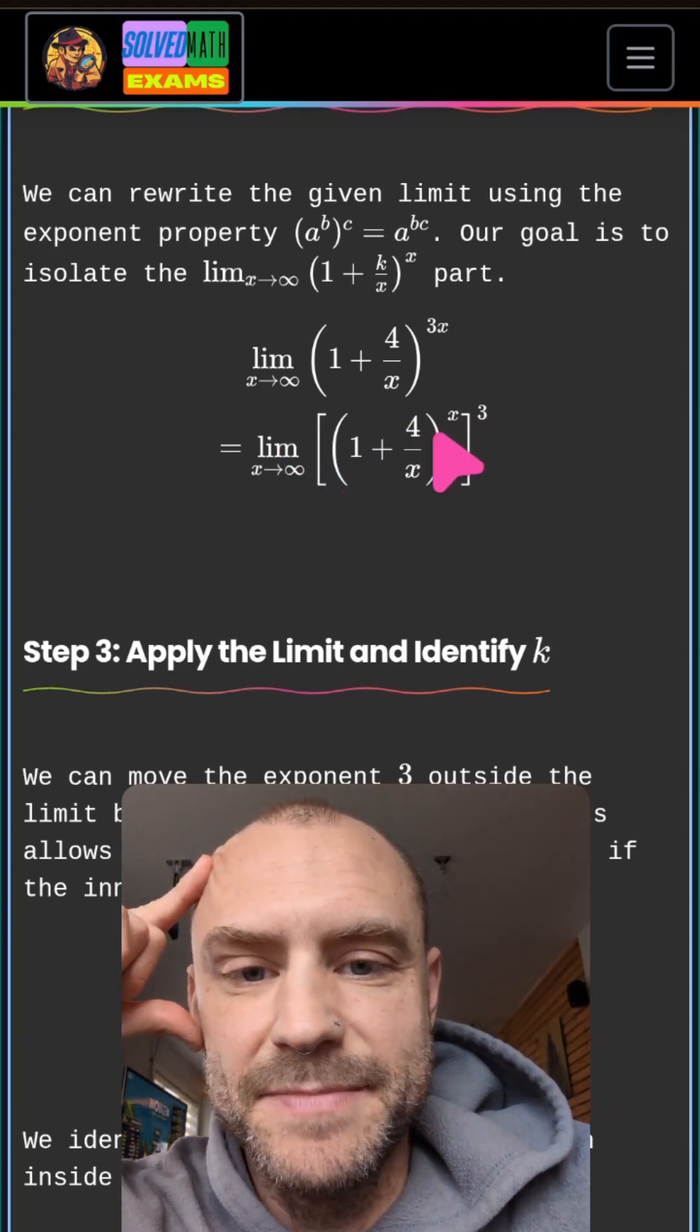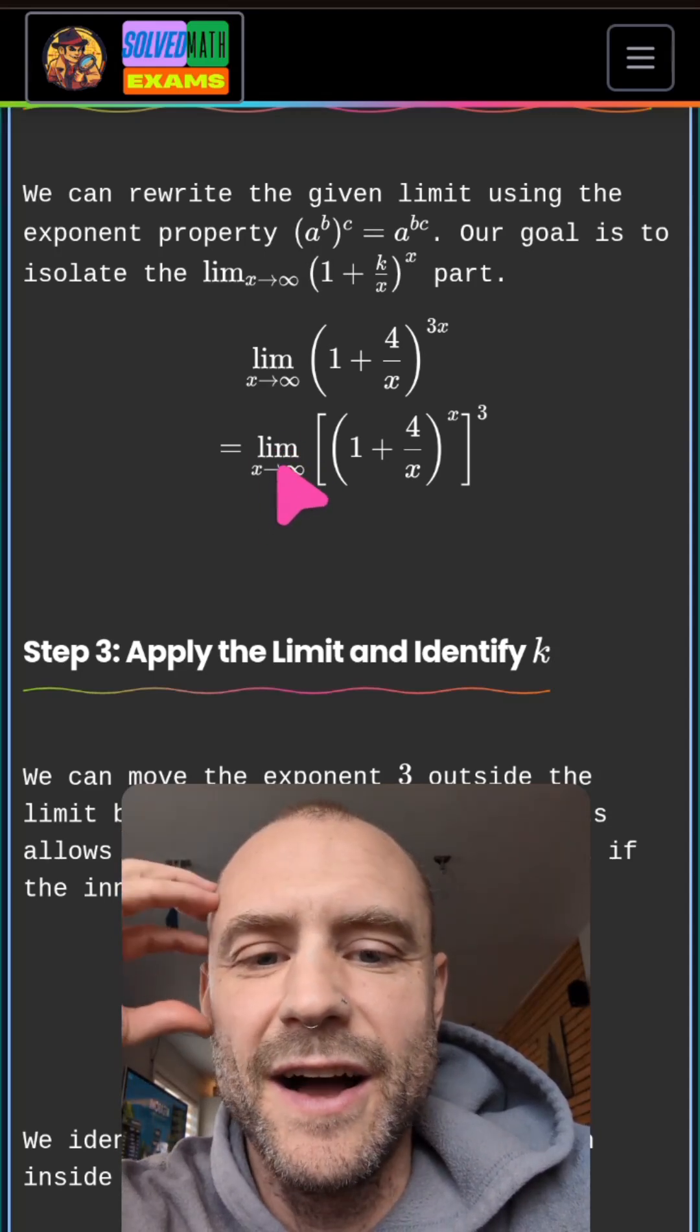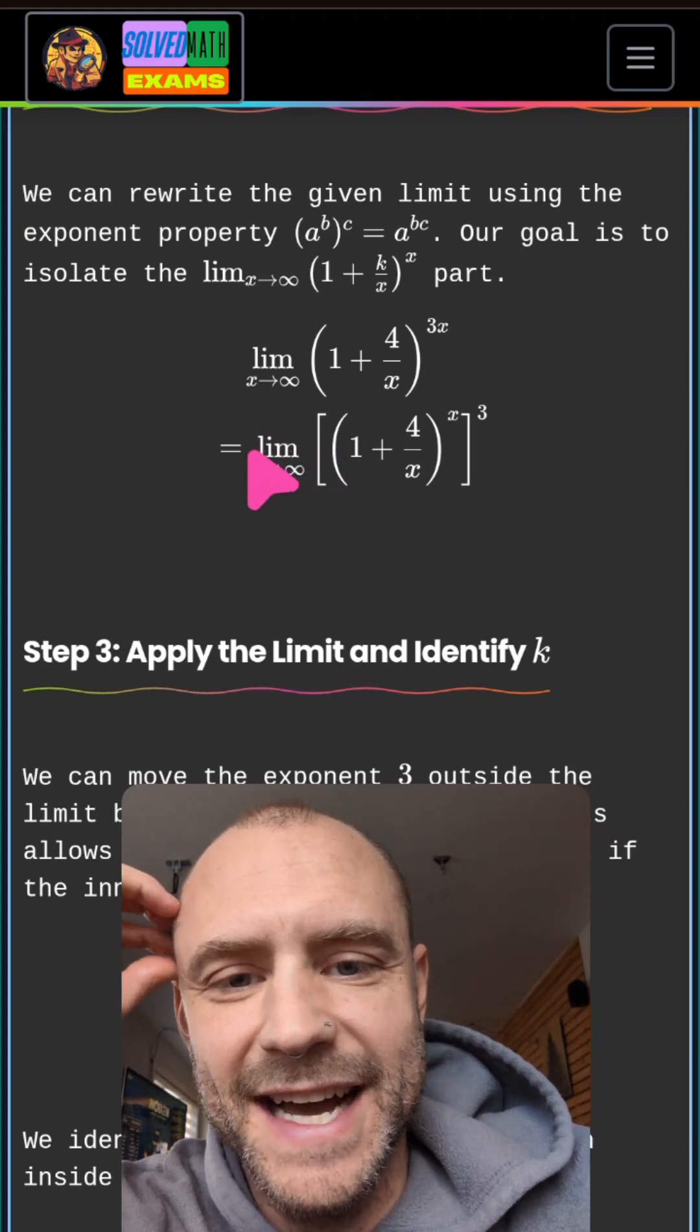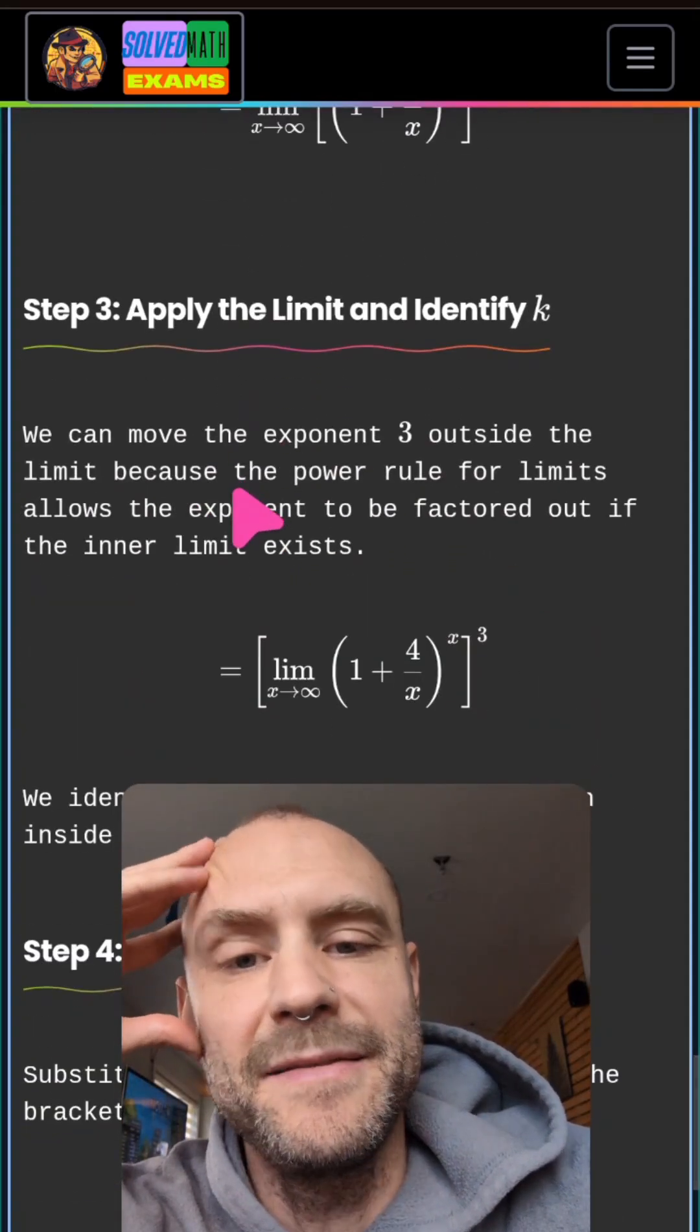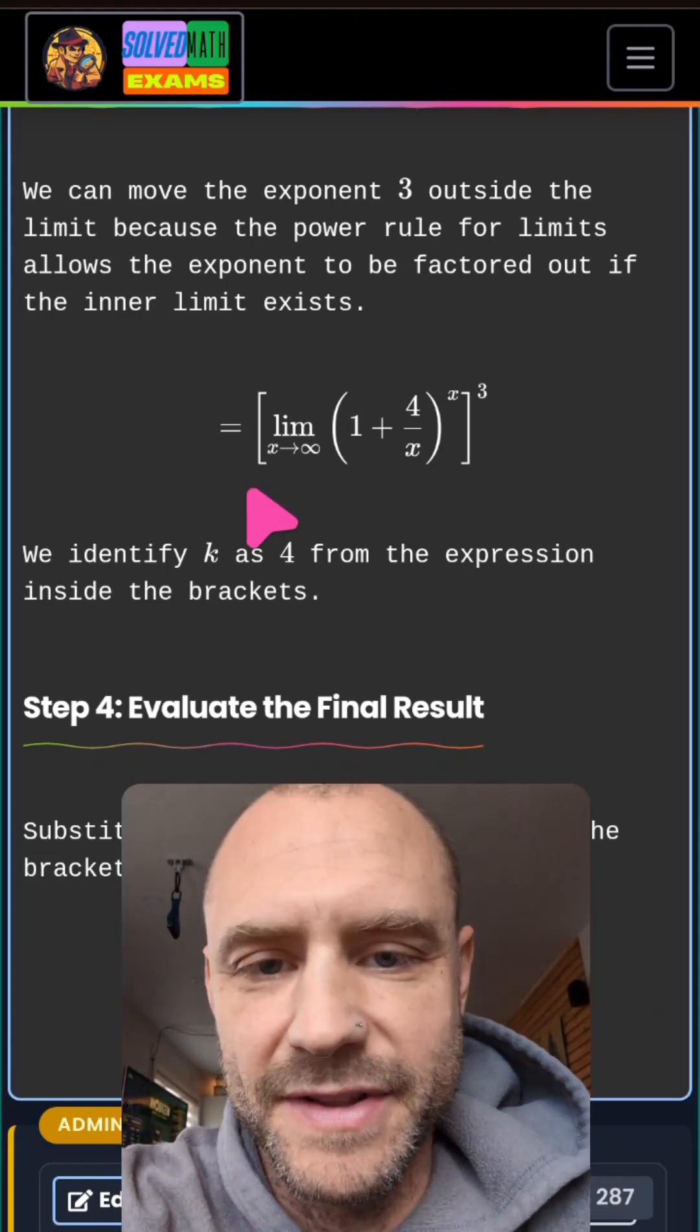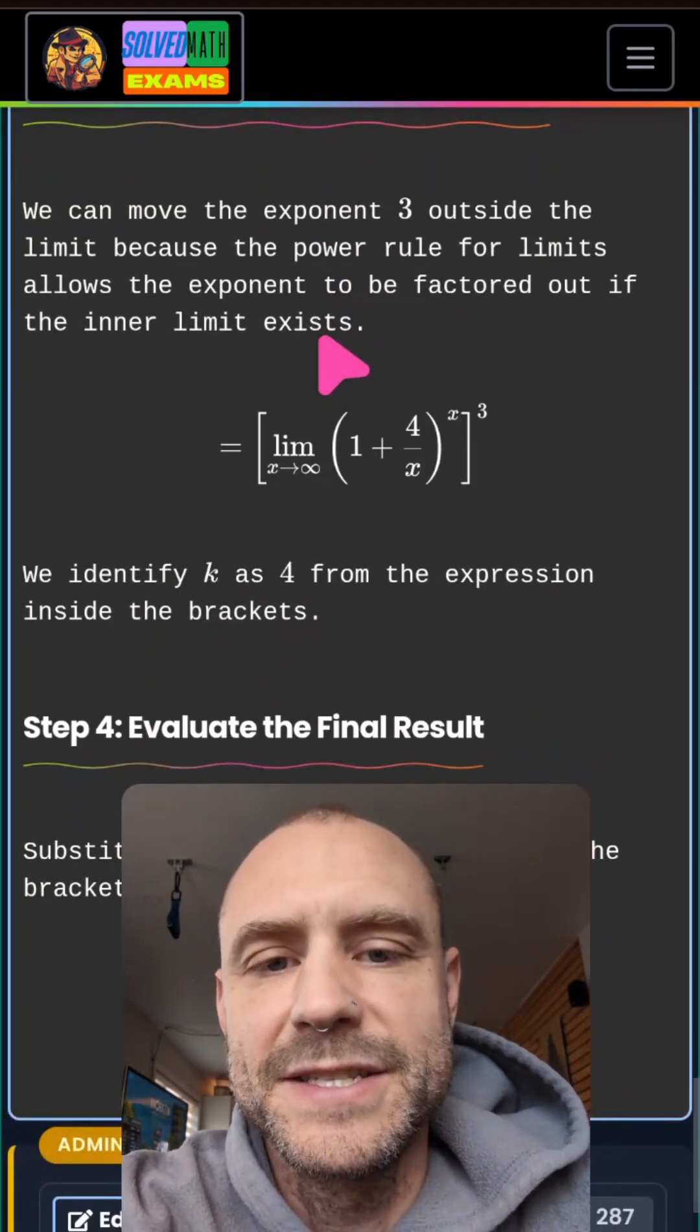Now, the question is, we have this 3 which is an exponent of this thing, and the limit is outside. Are we allowed to bring this square bracket on the other side of this limit as well? Because of the properties of limits, yes, you can do that. Those things are equivalent. So this line here is equal to this line up here.